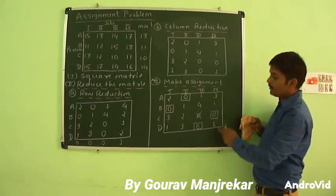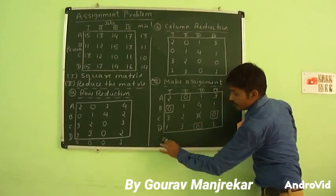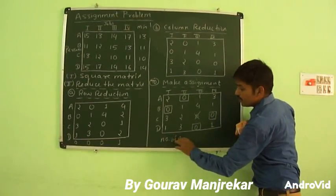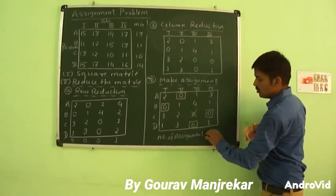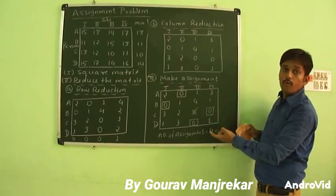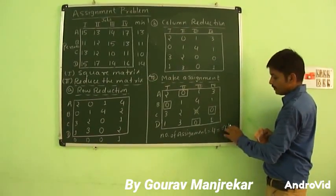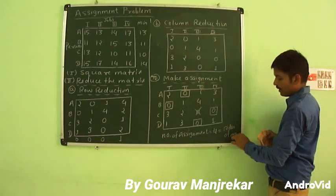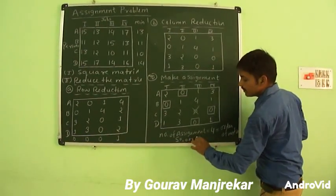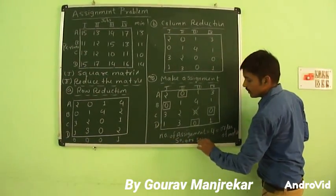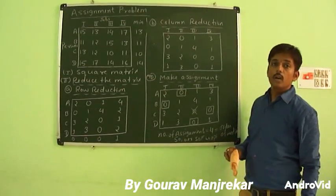We now count the number of assignments. The number of assignments is 4, which equals the number of rows (or columns) — the order of the matrix. Since the number of assignments equals the order, our solution is optimal.